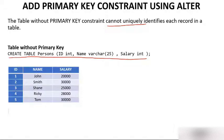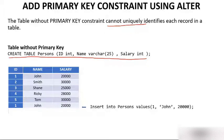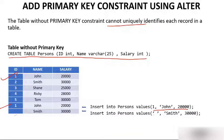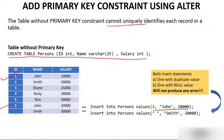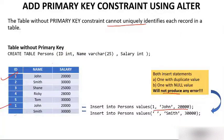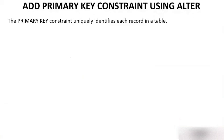A table without a primary key cannot uniquely identify each record. We have shown you this table — it is not a good table because it does not have a primary key. You can insert the value '1, John, 20000' and it inserts fine. Duplicate values are also allowed since there is no primary key. Null values can also be inserted. Both insert statements — one with duplicate value and one with null — will not produce any error.